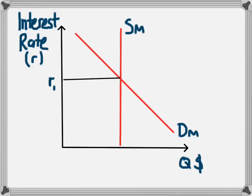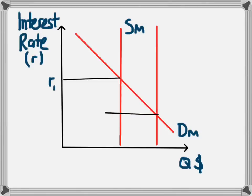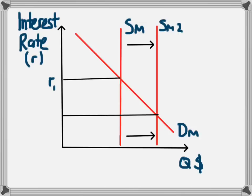To get higher levels of investment we need a lower interest rate, and we know that the government or the central bank has control over the supply of money. If they were to increase the supply of money — shift it to the right — this will lead to a new, lower level of interest. The increase in the supply of money leads to a decrease in the interest rate from R1 down to R2.